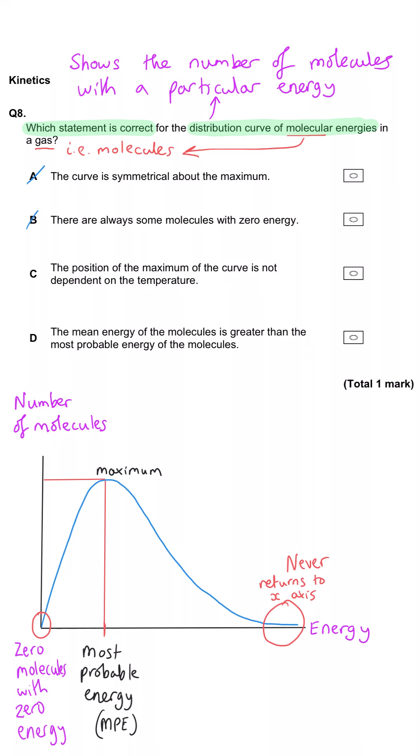C, the position of the maximum of the curve is not dependent on the temperature. No, that's absolutely not true. As the temperature increases, the maximum of the curve will increase as a result, and the peak will get shallower.